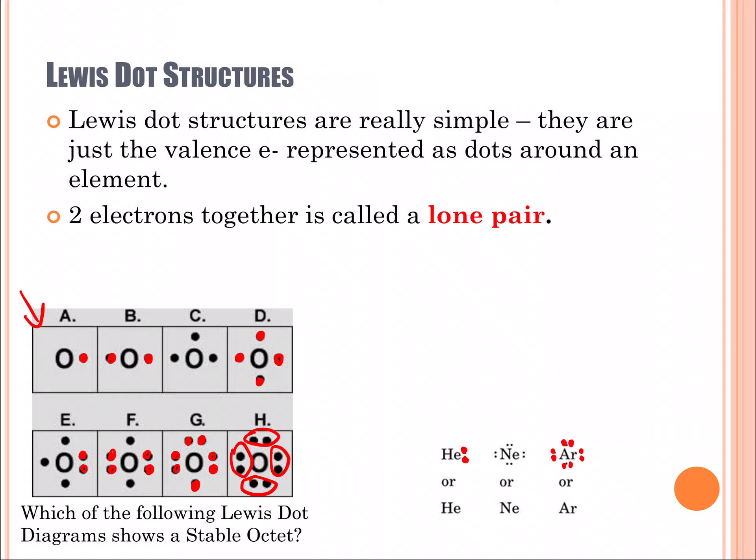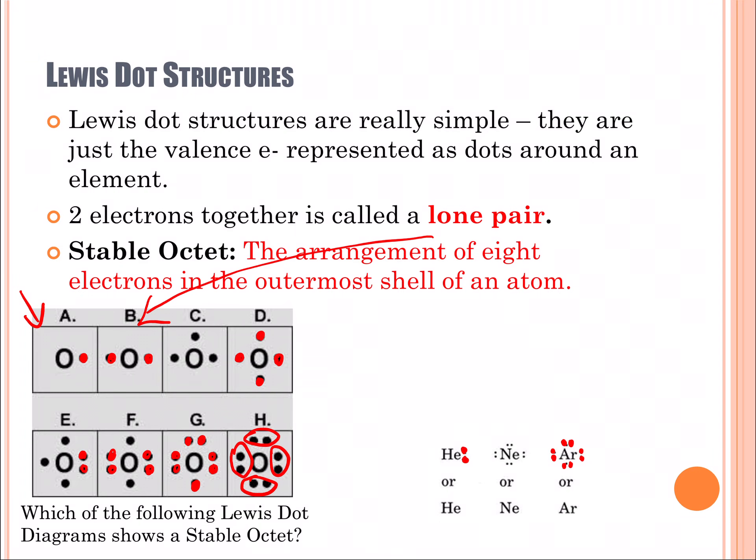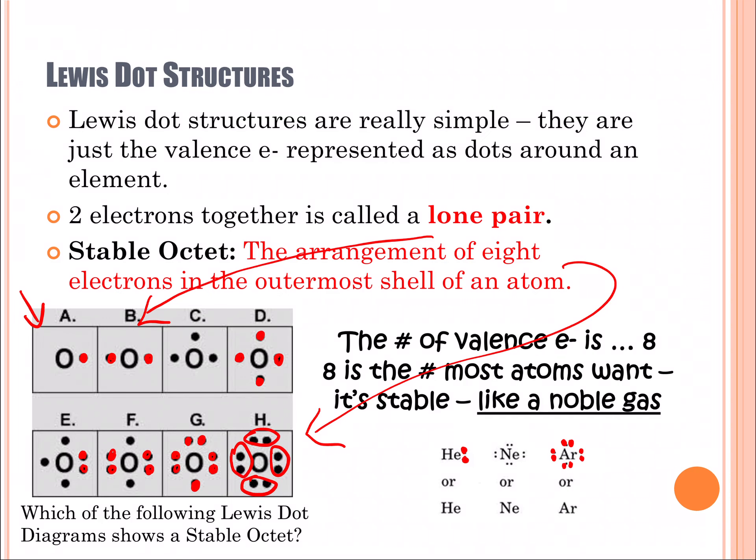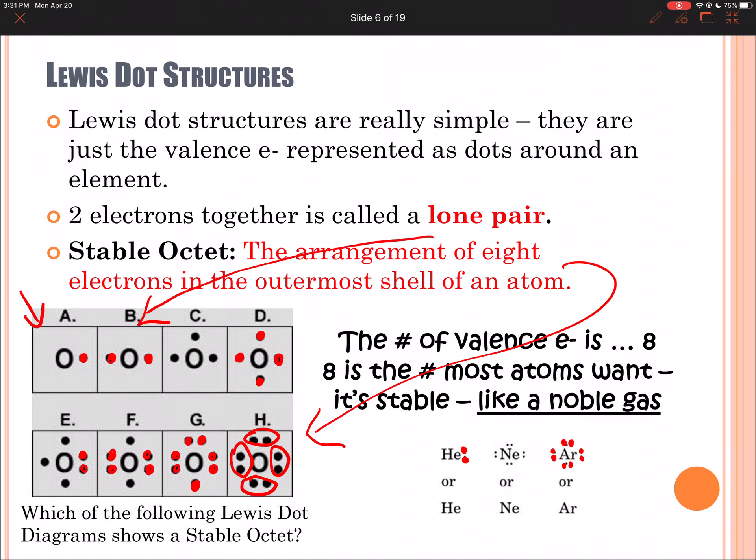Two electrons together we call that a lone pair. A stable octet, which is this, you'll have eight electrons in the outermost shell.